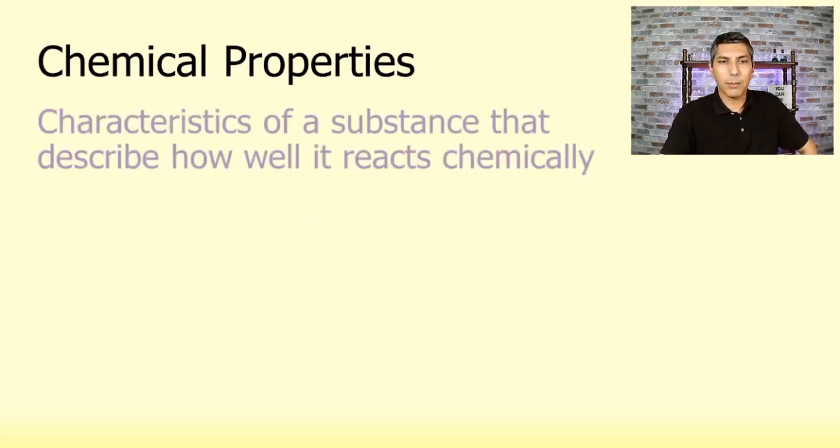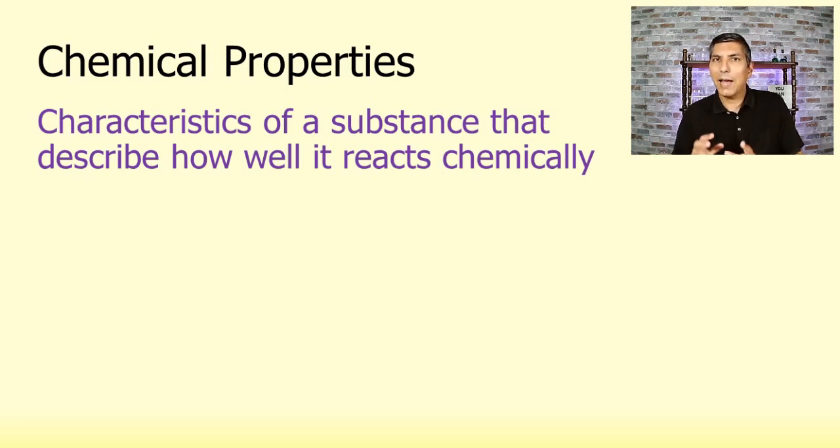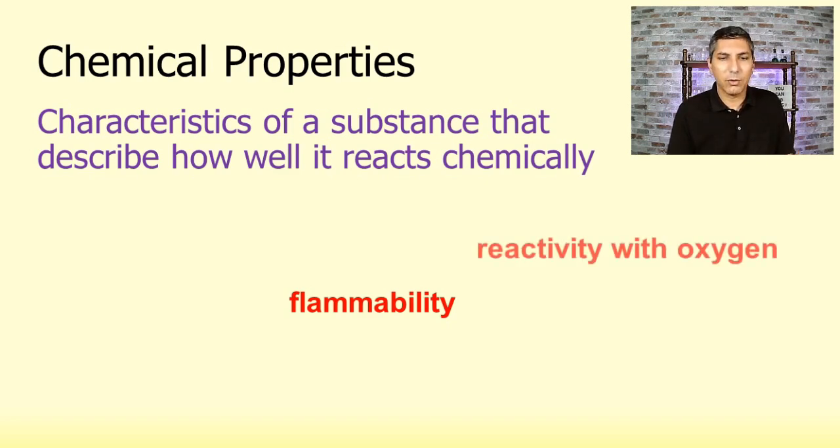On the other hand, chemical properties are the characteristics of a substance that describe how something reacts or how well it reacts chemically. So in order to observe a chemical property, we have to have a chemical reaction. So for example, if I say that something is flammable, well, the flammability of a substance refers basically to how well it burns or how well it bursts into flames. And we can only observe that if there's a chemical reaction. So flammability is a chemical property.